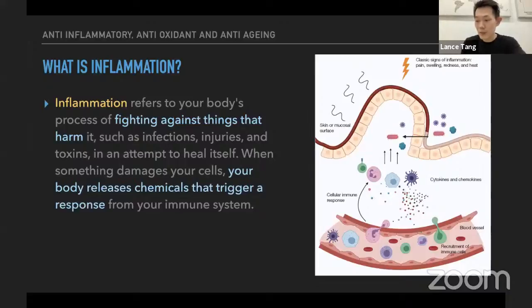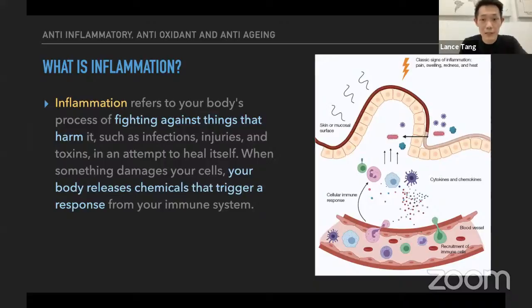From this picture, if I briefly explain, we'll have a better understanding of inflammation. Whenever there are intruders — for example, bacterial, virus, or foreign bodies entering our body — our immune system will react. The moment it reacts, it causes more fluids to flow from our blood vessels to the tissue area. You can see at the bottom here — this is actually the blood vessel.